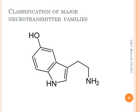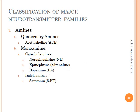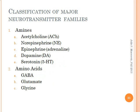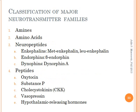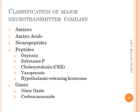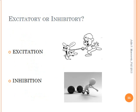There are different ways to classify neurotransmitters. One way is by breaking them into families based on their molecular makeup. The amines family includes acetylcholine and the ever-popular catecholamines — norepinephrine, epinephrine, and dopamine — as well as the indolamines, including serotonin. The amino acids include gamma-aminobutyric acid (also known as GABA), glutamate, and glycine. The neuropeptides include the enkephalins, endorphins, and dynorphins. The peptides include oxytocin, substance P, cholecystokinin, vasopressin, and hypothalamic-releasing hormones. Lastly, there are gases that act as neurotransmitters, including nitric oxide and carbon monoxide.